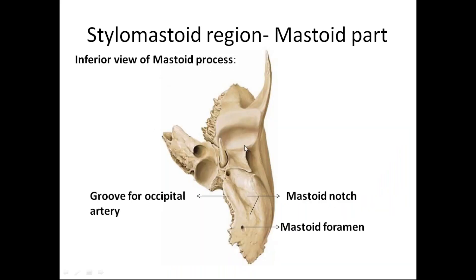In the inferior view of the mastoid process, you can see the mastoid process, the tympanic plate of the temporal bone, and the external acoustic meatus. Just posterior to the mastoid notch — which gives origin to the posterior belly of the digastric muscle — you can see a groove that transmits the occipital artery, a branch of the external carotid artery. The mastoid process gives origin externally to the sternocleidomastoid, splenius capitis, and longissimus capitis muscles. You can also see the mastoid foramen behind the notch and the groove.